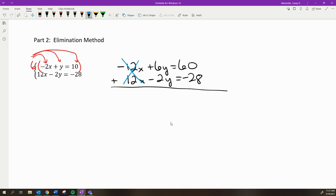If I keep adding, 6y plus -2y is 4y, and 60 + -28 = 32. Now I have an easy equation to solve: just divide both sides by 4, and I get y = 8.